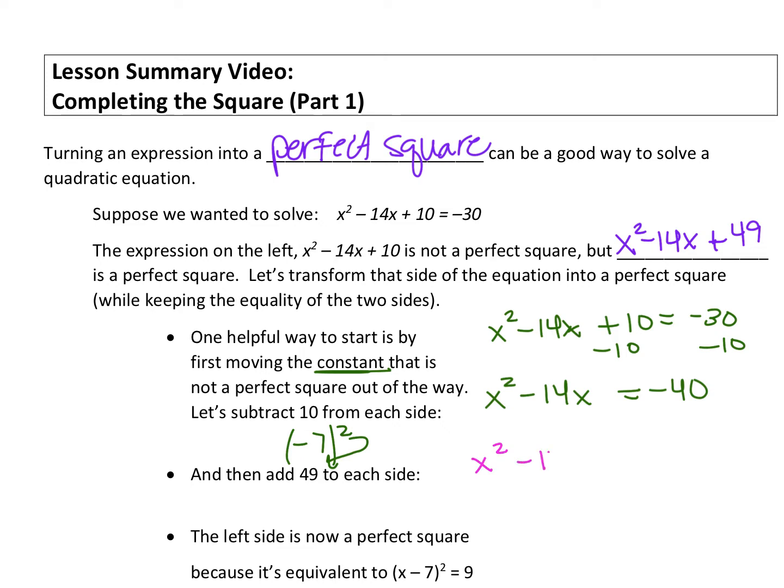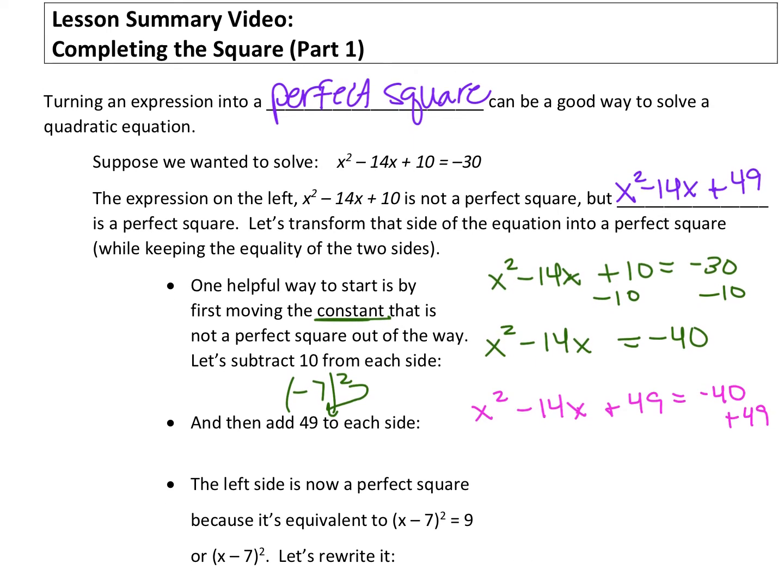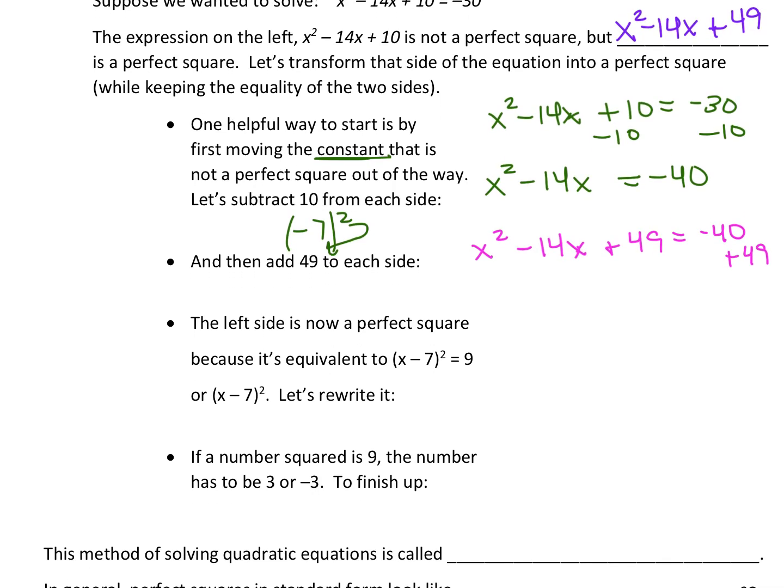So x squared minus 14x plus 49. But because we added 49 to the left side, we have to add 49 to the right side as well. That's keeping the equality of the statement. Whatever we do on one side, we do to the other side. This gives us a perfect square right here.